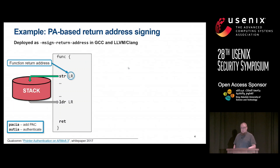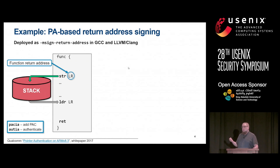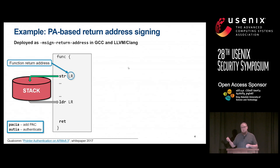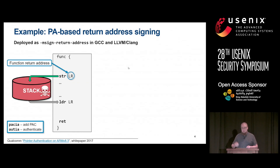As an example, we can look at GCC's and Clang's implementation of signed return addresses, which addresses return-oriented programming. On ARM, when a function is entered, the return address is in a dedicated link register. As long as it's in a register, we can assume the attacker can't modify it. But to allow subsequent function calls, the register must be written onto the stack, where the attacker can manipulate it and cause the function to return to an incorrect location.